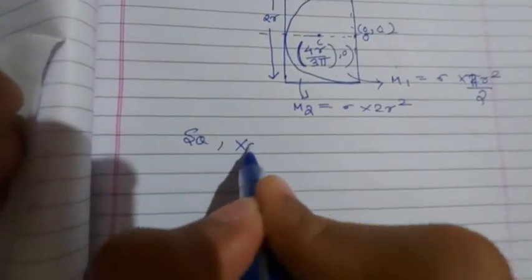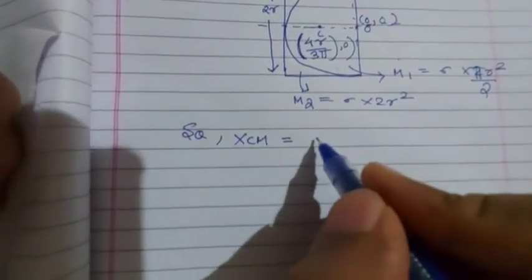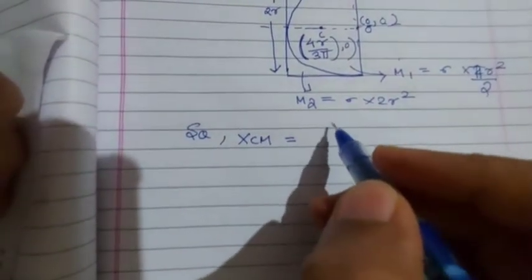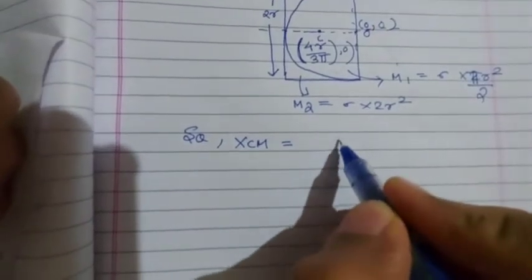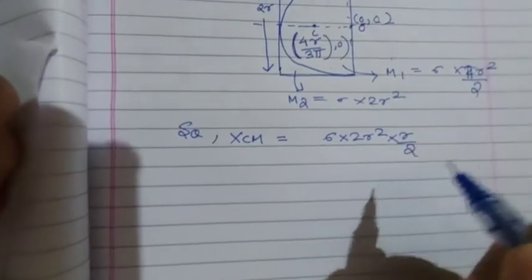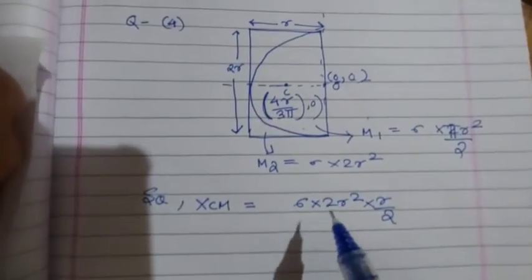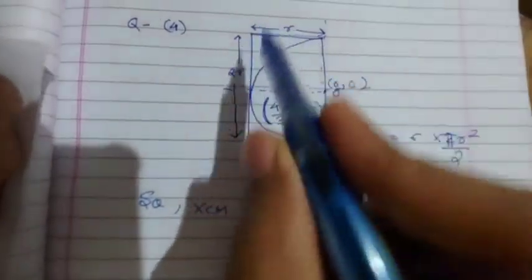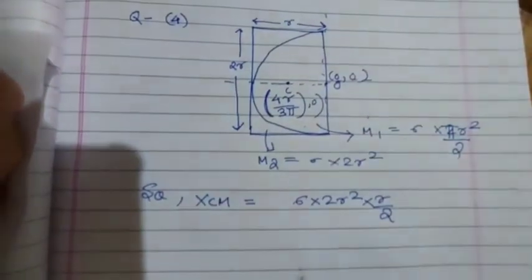So x center of mass equals σ times 2r² times r/2, because the center of mass of the rectangular plate is at r/2.